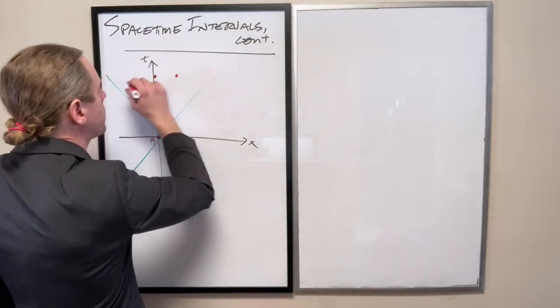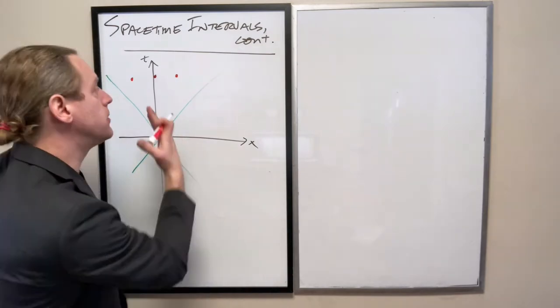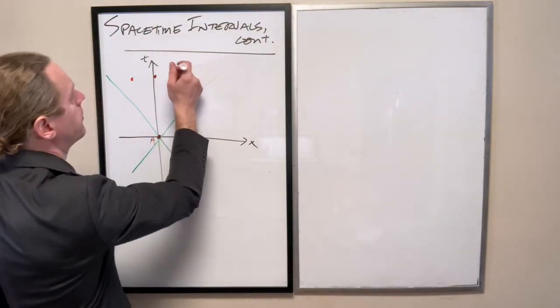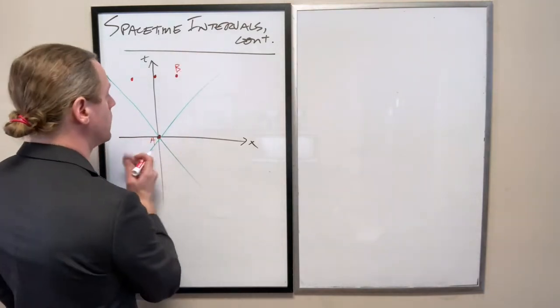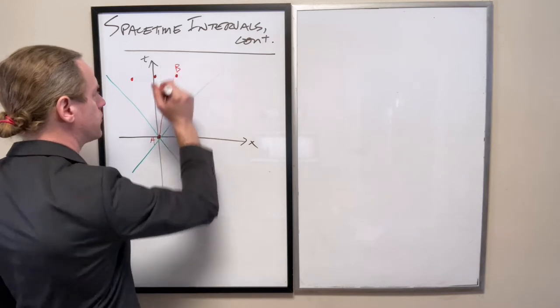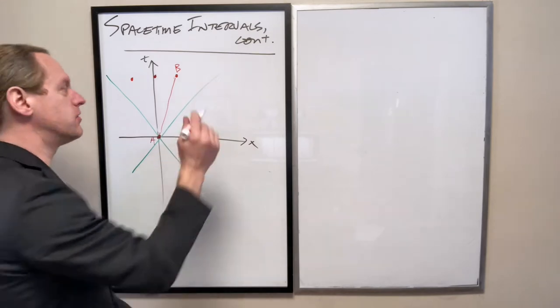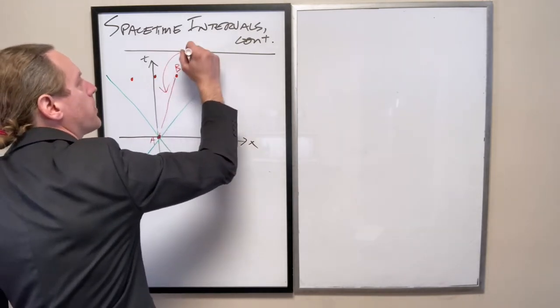Though any other event in the future light cone, you can always find some reference frame where event A and that other event, we'll call it just B, will both happen at the origin. Specifically, that's if you just draw a world line between them and the slope would be less than speed of light. The point is these two events are time-like separated.